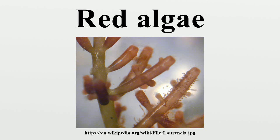The tetrasporophyte produces spore tetrads, which dissociate and germinate into gametophytes. The gametophyte is typically identical to the tetrasporophyte. Carpospores may also germinate directly into thaloid gametophytes.